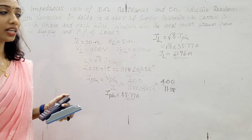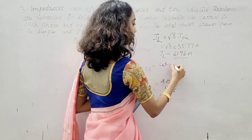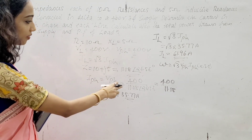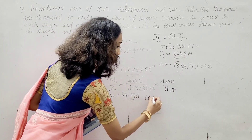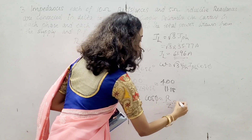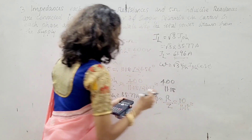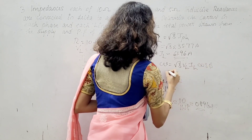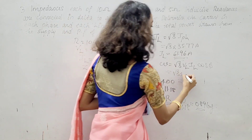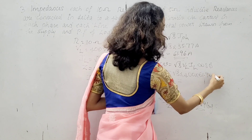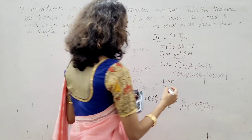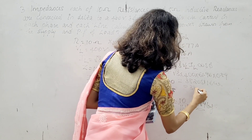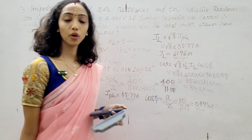Calculate the total power. W equals root 3 times VL times IL times cos φ. The power factor cos φ equals R divided by Z, that is 10 divided by 11.18, giving 0.89. Therefore W equals root 3 into 400 into 61.96 into 0.89, giving 38,205 W, that is 38.2 kW total power.